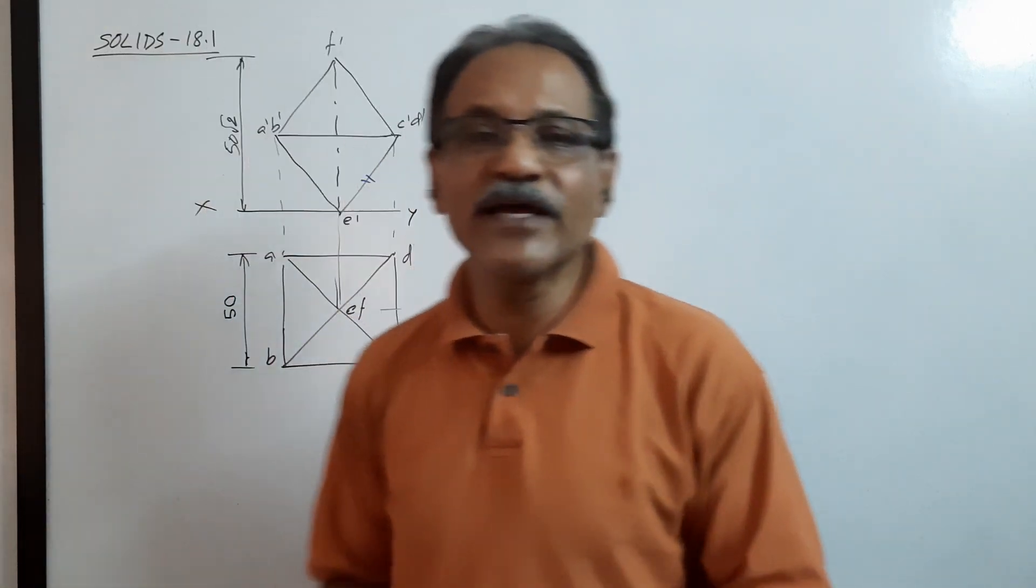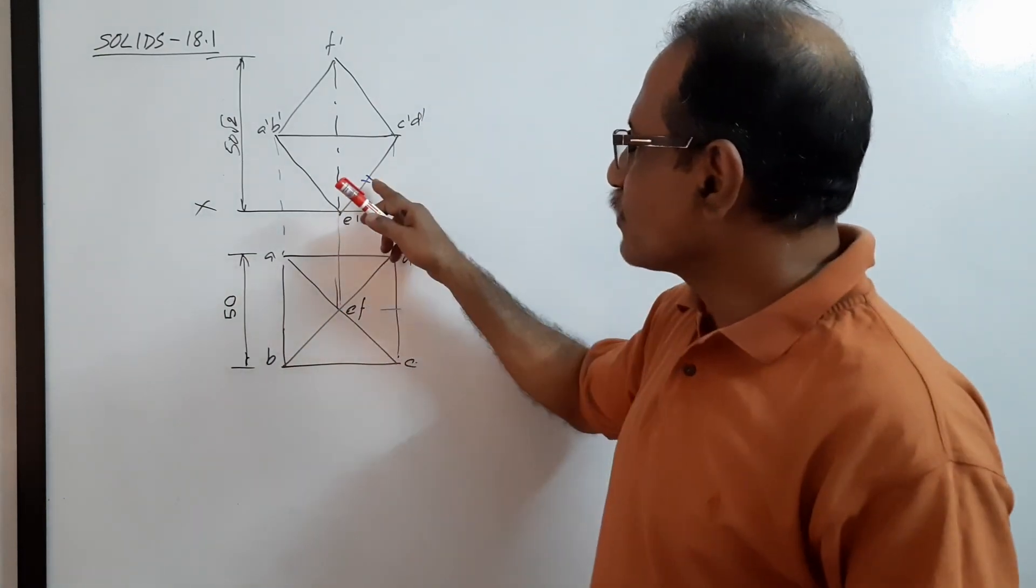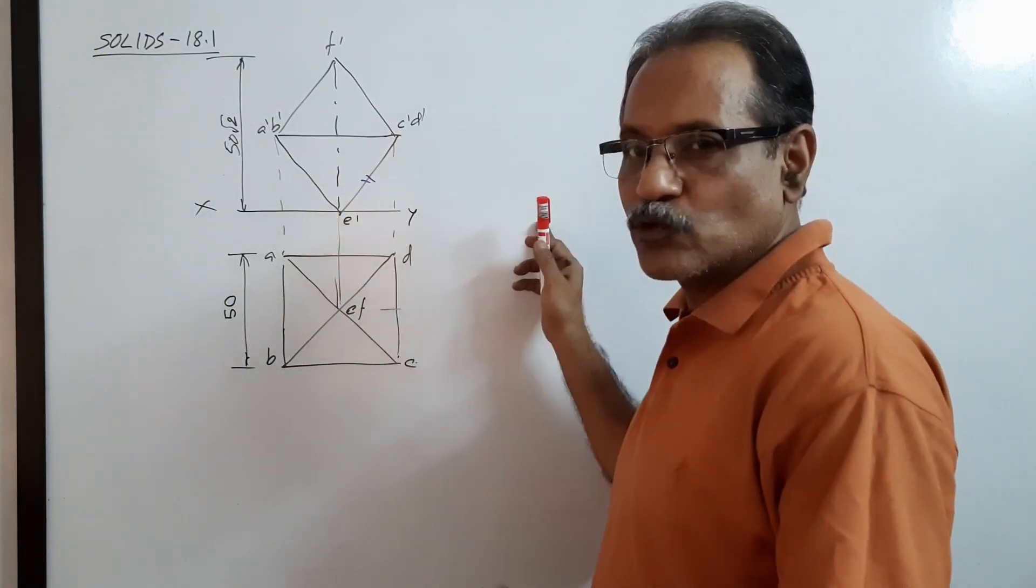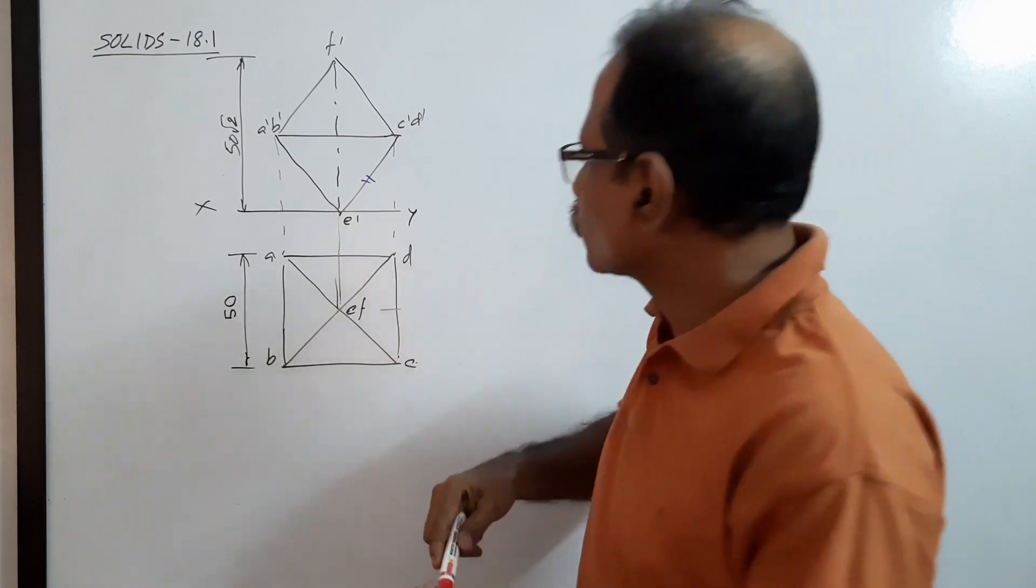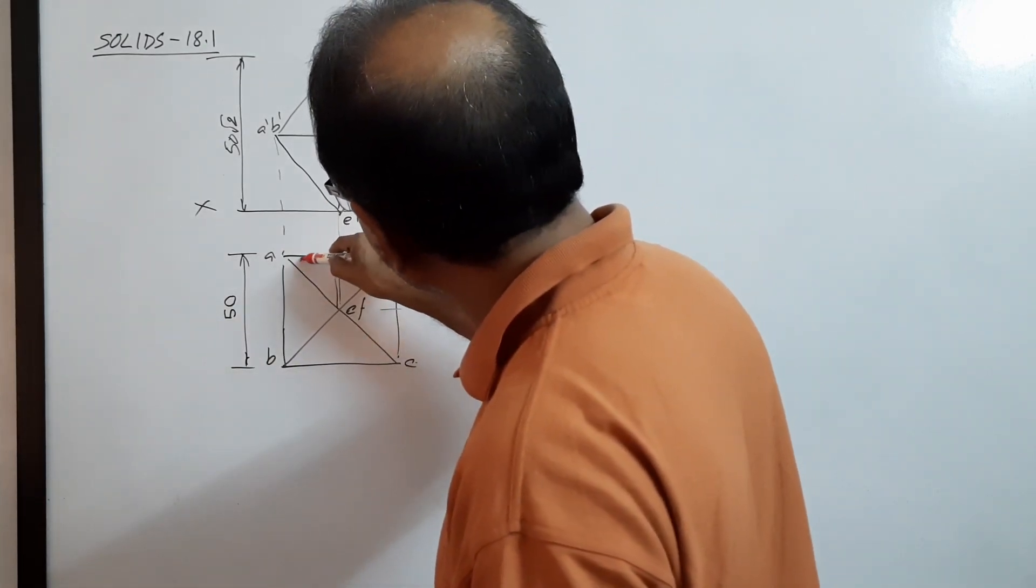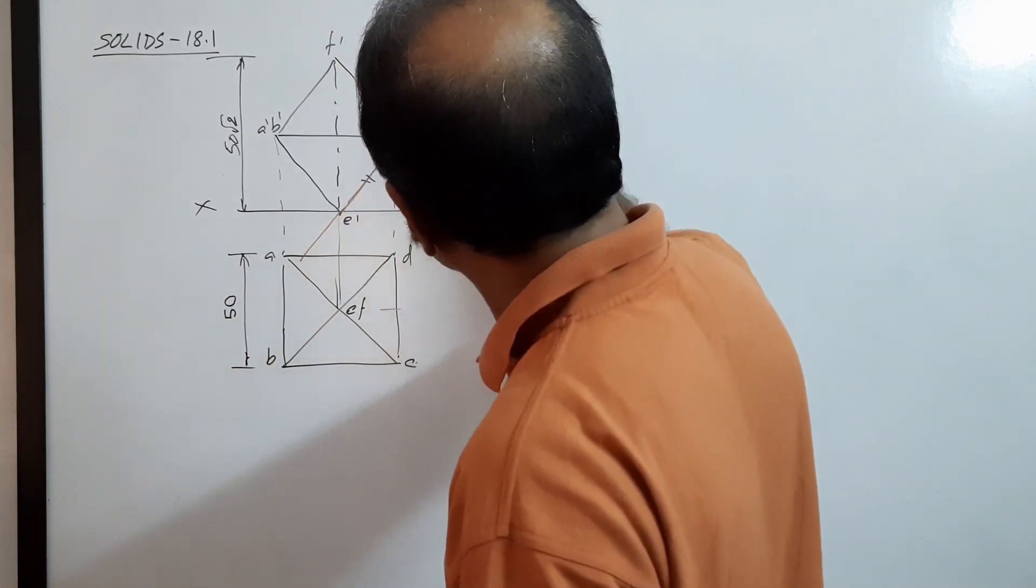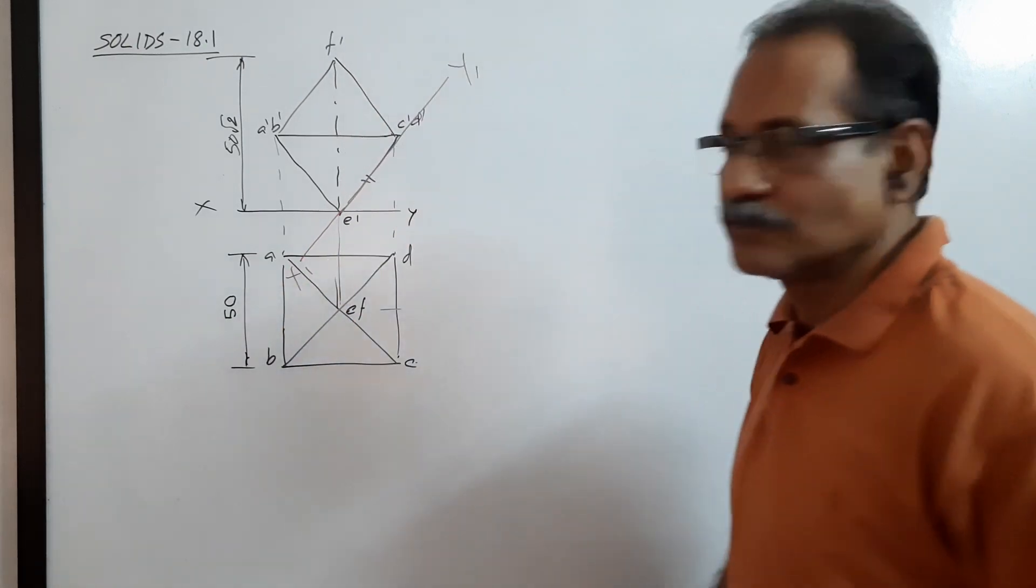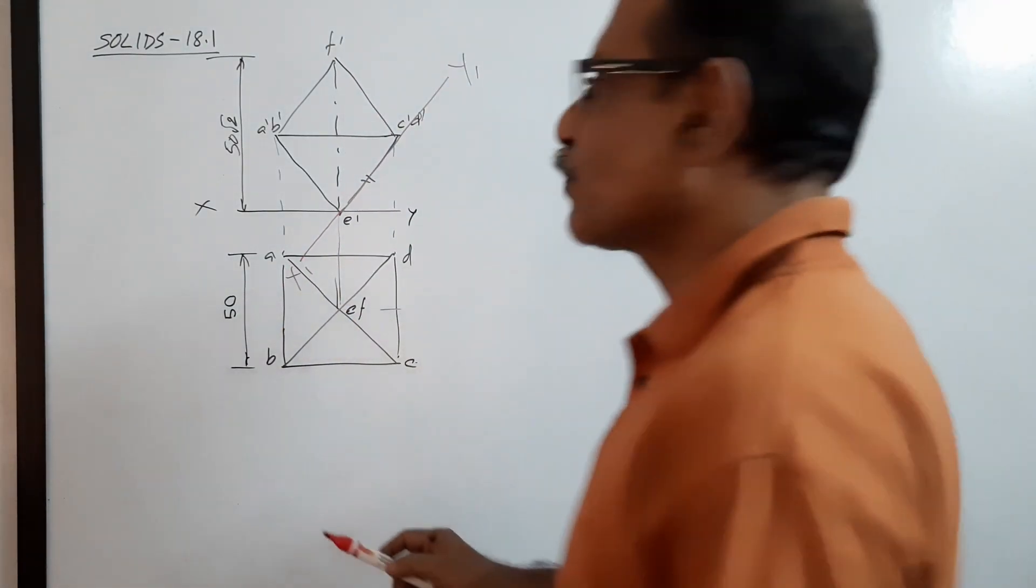Now we are going to draw this by auxiliary projection method. Instead of bringing this CDE to XY, I bring XY onto CDE so that this is X1Y1. Project a new plan.